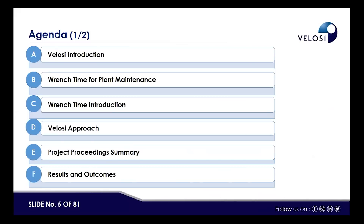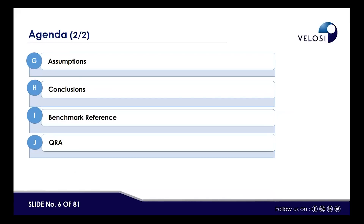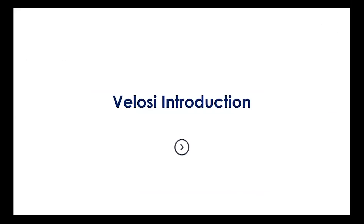Today's agenda covers the introduction about our company Velocity, then range time for plant maintenance — the range time introduction, our approach, project summary, and results and outcomes. Then we'll go towards assumptions, conclusions, and benchmark preferences, and at the end we will have a Q&A session. We'll touch the key theoretical and practical aspects of the subject matter in two hours.